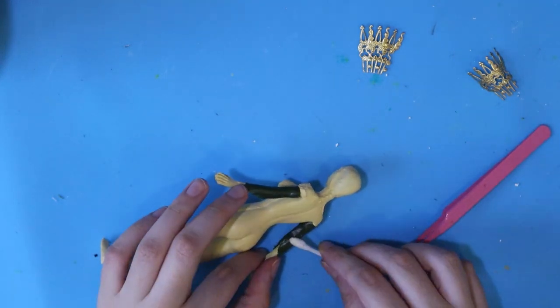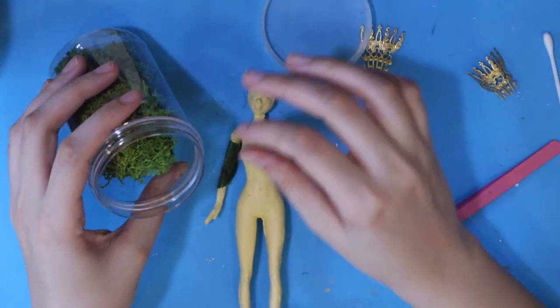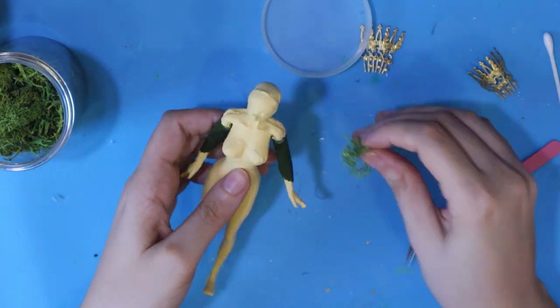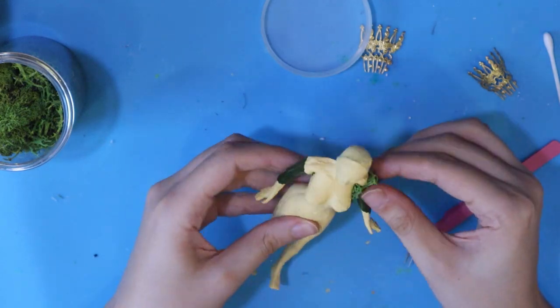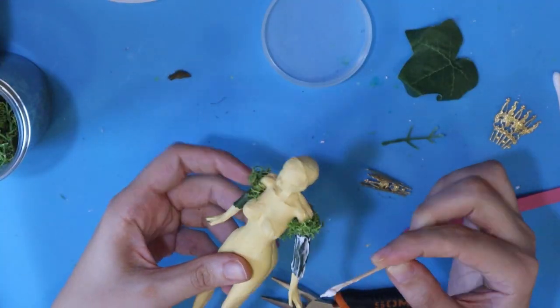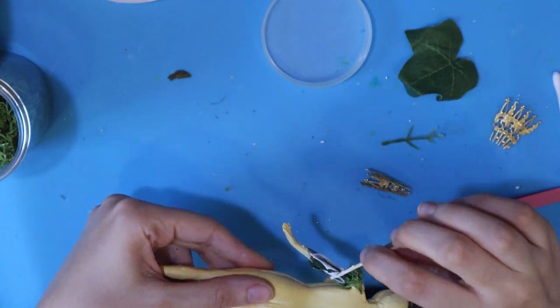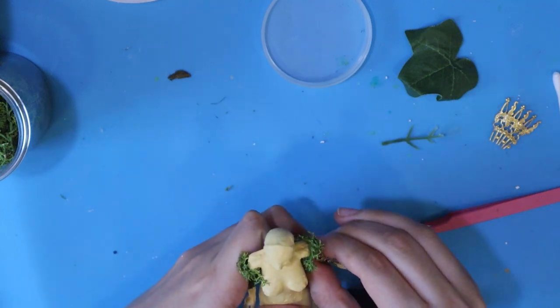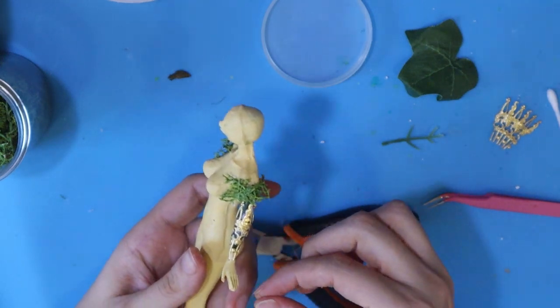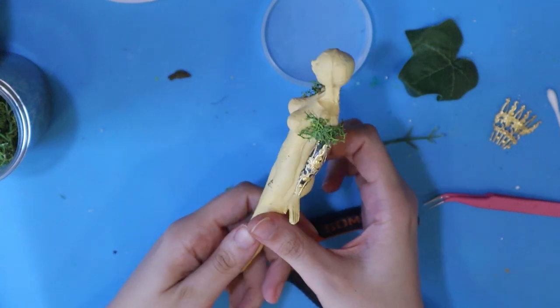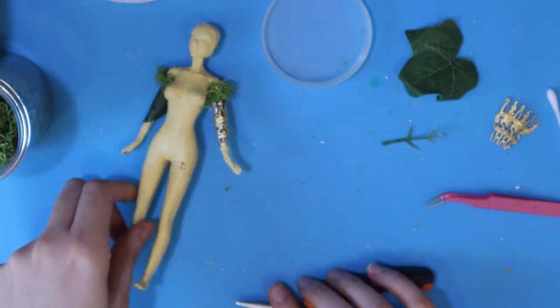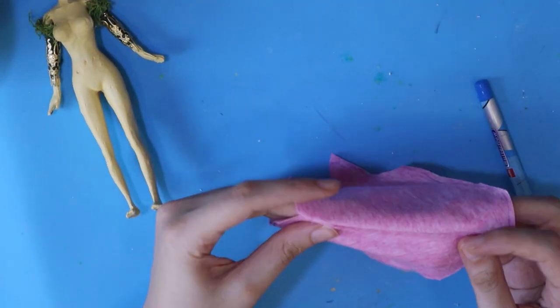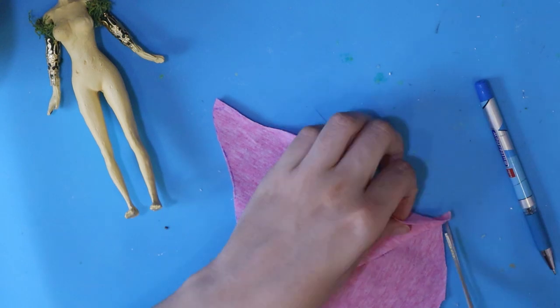I hot glue the leaves, cover the top part with preserved moss, and glue on metallic parts. For her skirts I just hot glue pieces of fabric and cut them to my liking.